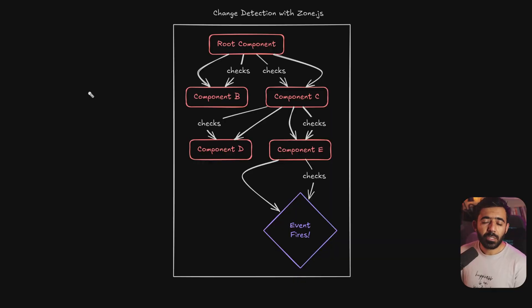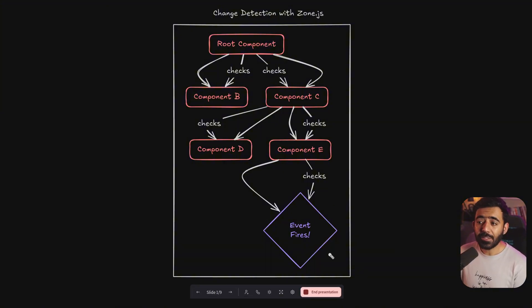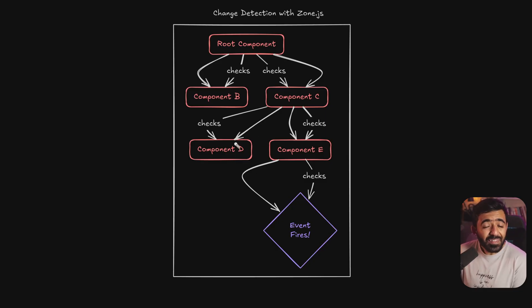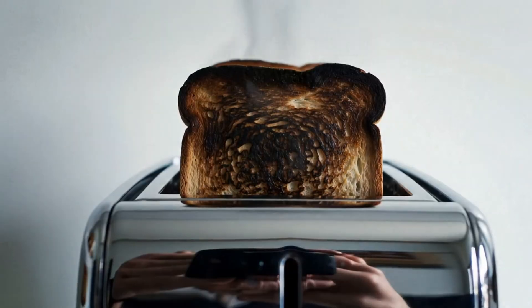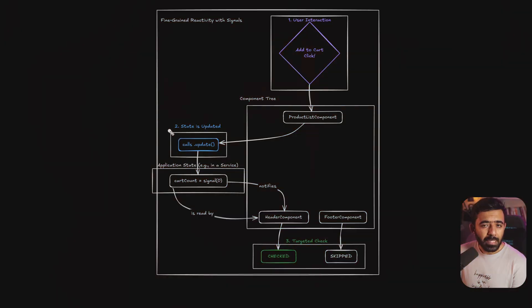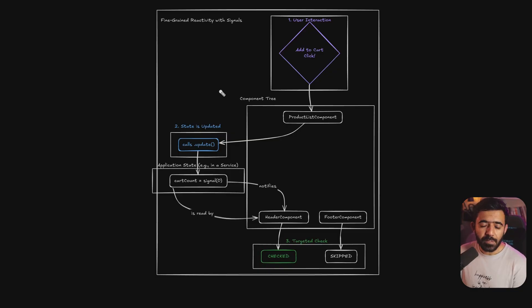Mistake number one: the 'check everything' mindset. For years we've relied on Zone.js to magically figure out when to re-render. You click a button, data arrives from an API call, and Zone.js tells Angular to check everything. Look at this diagram — this is the Zone.js world: an event fires in a tiny component and Zone.js tells Angular to check basically everything in the component tree. This is super inefficient — it's like alarming the whole city just because of one piece of burnt toast.